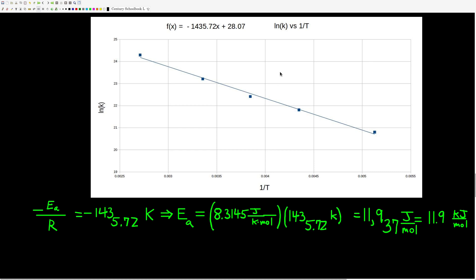We also, if we wanted to, could find the frequency factor. 28.07 is the natural log of the frequency factor. So, e to the 28, which is a pretty big number, would be the frequency factor.